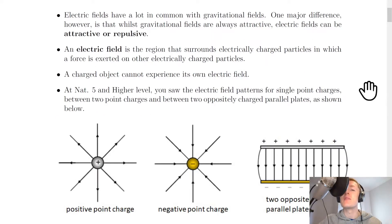And what do we actually mean by an electric field? Well here's its definition. An electric field is the region that surrounds electrically charged particles in which a force is exerted on other electrically charged particles. We saw in both Nat 5 and Higher that a charge existing on its own will have its own electric field.